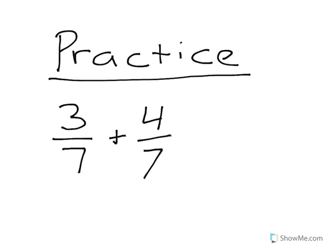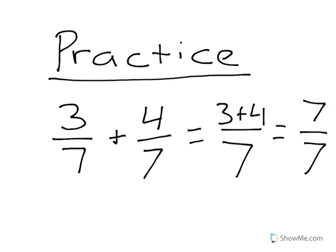One more practice problem: three sevenths plus four sevenths. Hit pause and solve it. You should have carried your denominator straight over to get seven — remember, we don't add the denominators together, we just carry them across. Three plus four gives us seven, and our denominator is seven, so the answer is seven sevenths, which means our answer is actually one whole.